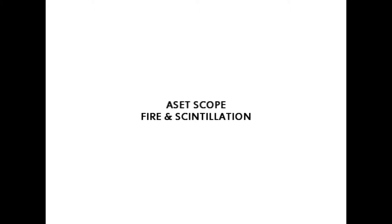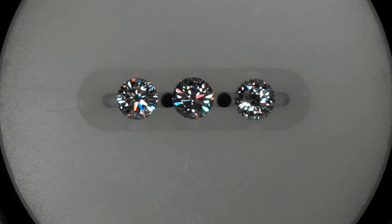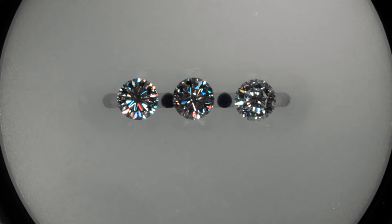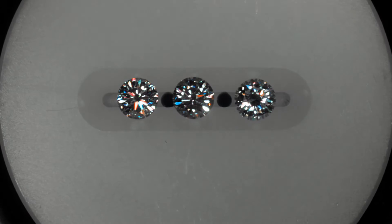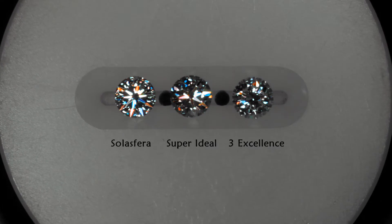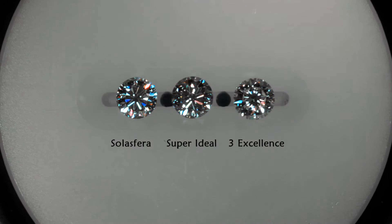In this video we'll be talking about fire and scintillation. To analyze this, the diamonds should be viewed under intense lighting conditions such as LED or sunlight. Over here we have three diamonds — starting on the left is our Solar Sphera round,